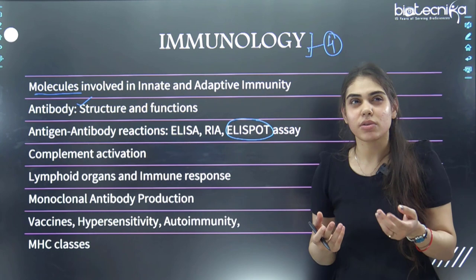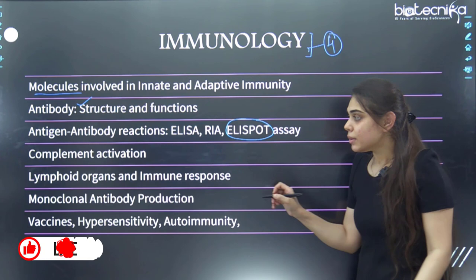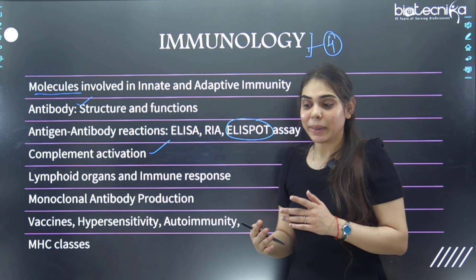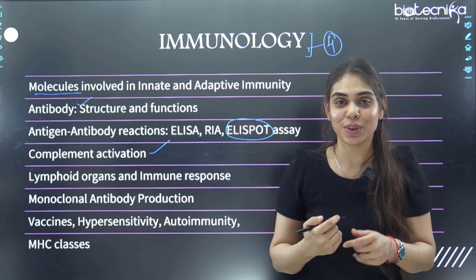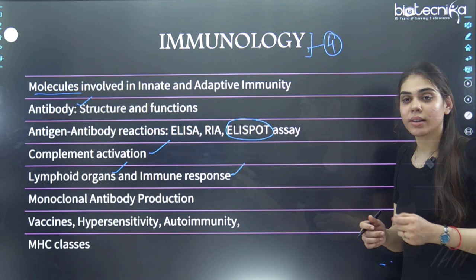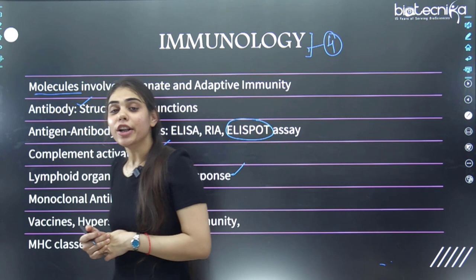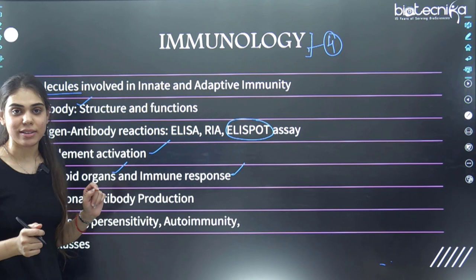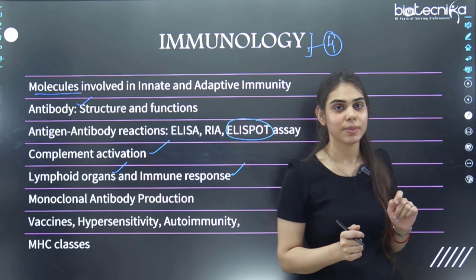Next is complement activation. They generally ask about how the alternative pathway works, often in match-the-following format. Next, what are the types of lymphoid organs and different types of immune responses? For monoclonal antibody production, study B-cells and myeloma cells — whether B-cell is HGPRT negative or positive — and the role of aminopterin and whether it blocks the de novo or salvage pathway.